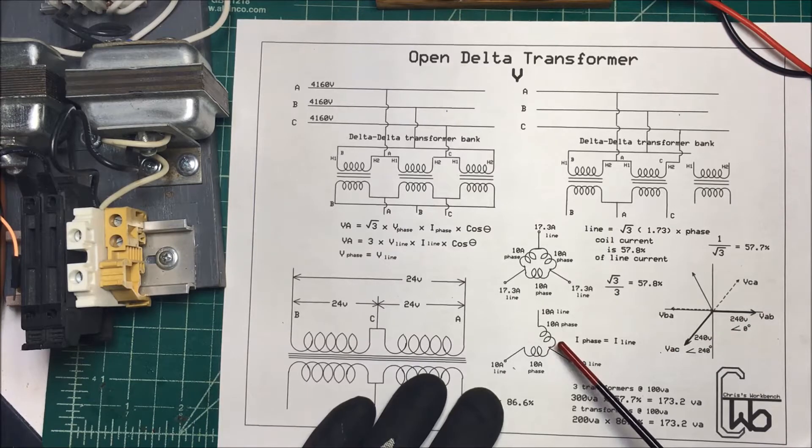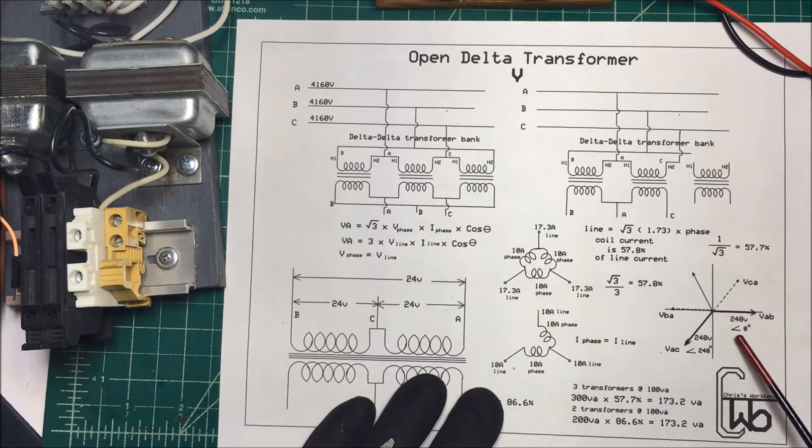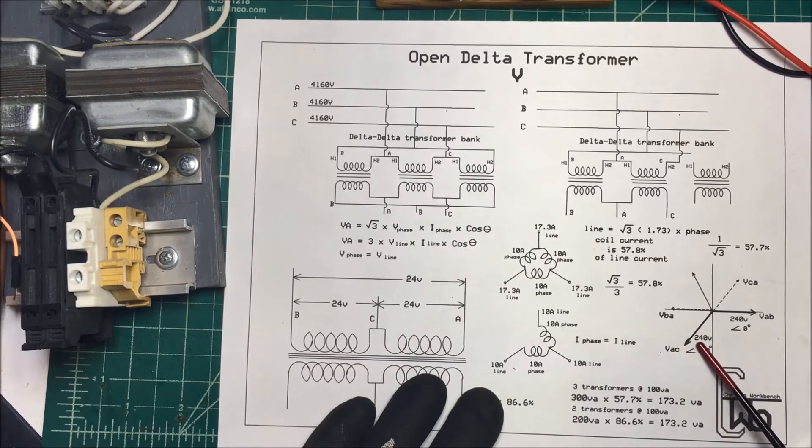So say we have from A to B here, we have our phase here. It's at zero degrees. And then we're missing this phase over here, which would be at 120 degrees. And then this phase down here, we have that one. It's going to be at 240 degrees.